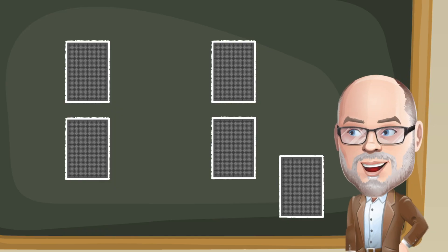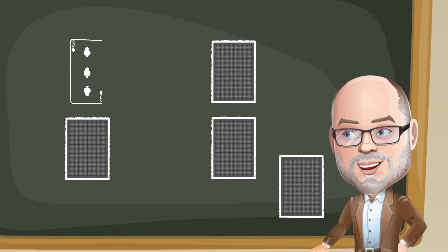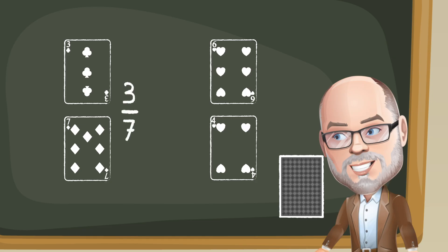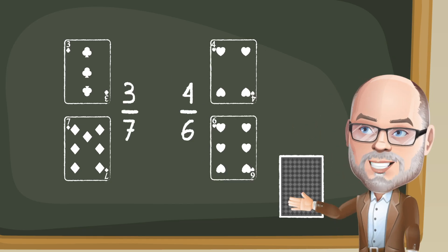Let's play a round. Here, player one flipped over a three and a seven, and player two flipped over a six and a four. Player one made three sevenths. Player two made four sixths.